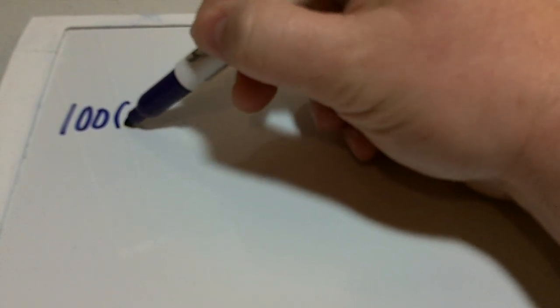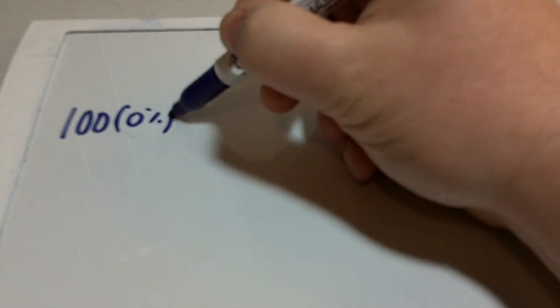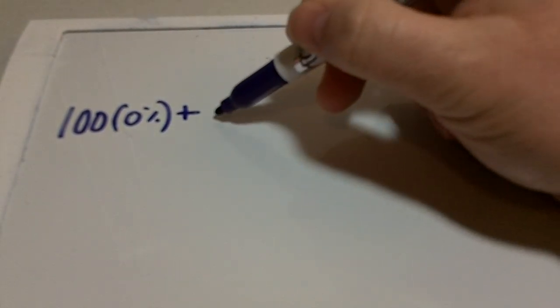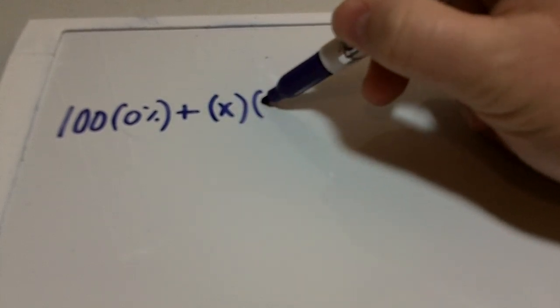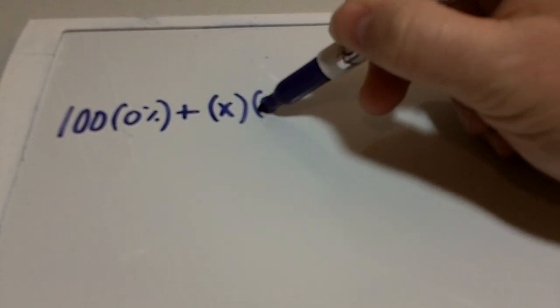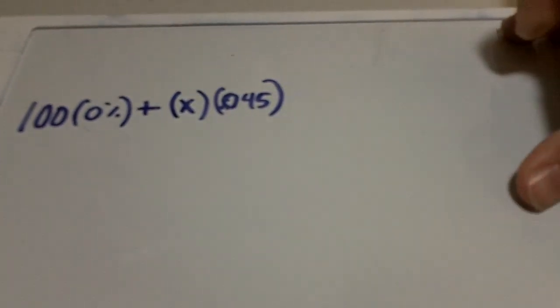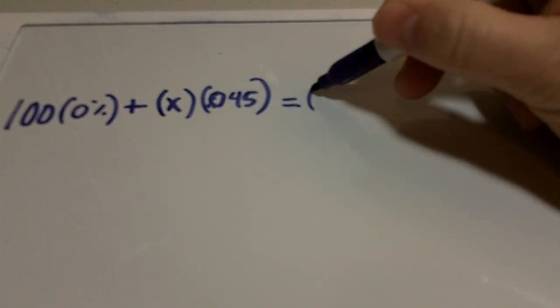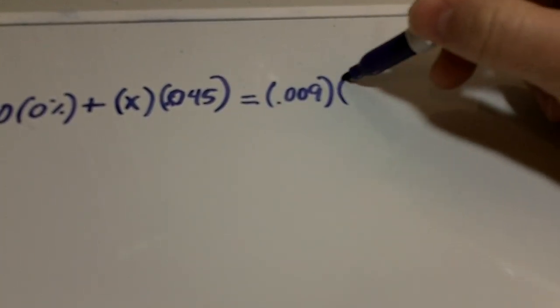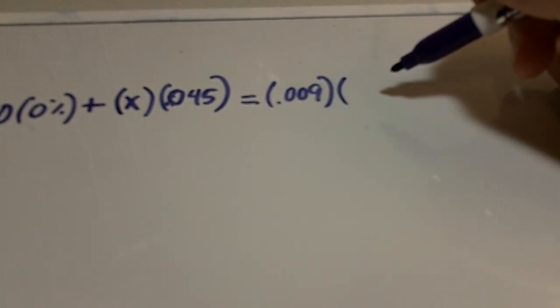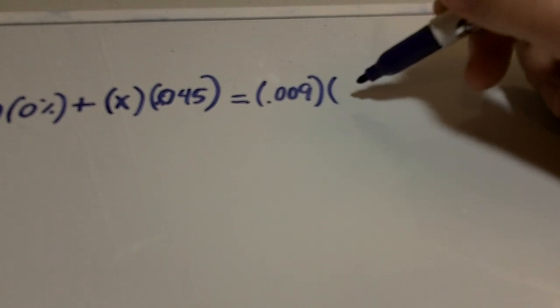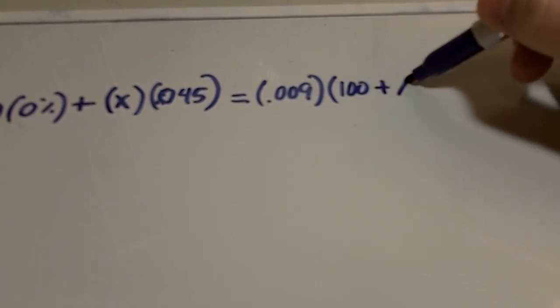Okay, so what that would look like is this: we have 100 milliliters of zero percent plus we have an unknown amount that we're going to add to it of 0.045. And then we need it to equal 0.009. And then the volume of our completed desired solution is going to be at least 100 milliliters plus the unknown amount that we put in.